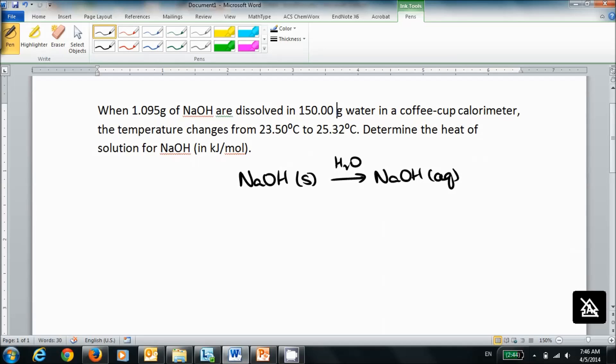Now whenever you have a calorimeter problem, you're going to first figure out the heat absorbed by the calorimeter, and in this case specifically the water in the calorimeter. And that's the mass of the water times the specific heat times the change in temperature.